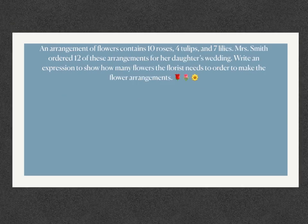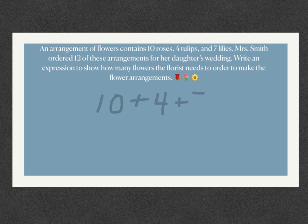We're going to take that same arrangement of flowers — the ten roses, four tulips, and seven lilies — but we're going to step it up a little this time. Now Mrs. Smith ordered twelve of these arrangements for her daughter's wedding. Write an expression to show how many flowers the florist needs to order to make the flower arrangements. So we know that we have to figure out the total number of flowers first. Ten plus four plus seven gives us the total for one arrangement; however, Mrs. Smith needs twelve of these arrangements.